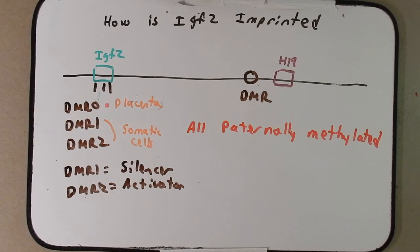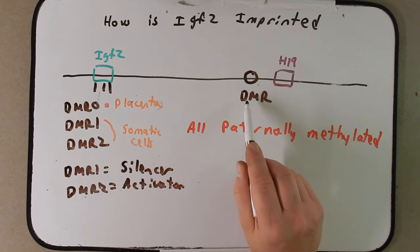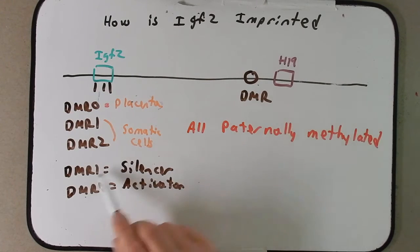Now I want to show you what's happening here maternally and paternally. Before I show you, I'm going to tell you now that DMR here is going to interact with DMR1 and DMR2 by looping the chromosome around. So let me go ahead and show you what I'm talking about.